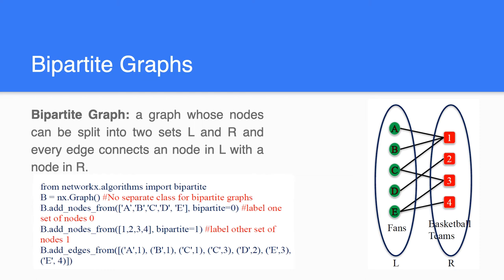To implement the bipartite graph we make use of the Python module NetworkX. The bipartite function is not present directly inside NetworkX like other functions. To make use of bipartite we have to use its sub-libraries. From networkx.algorithms, in the algorithm sub-library, we have the bipartite function.